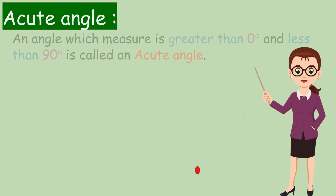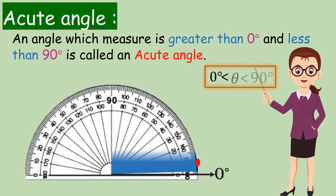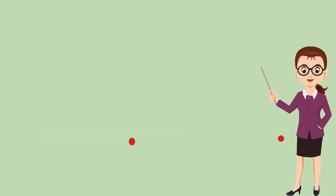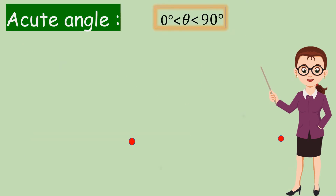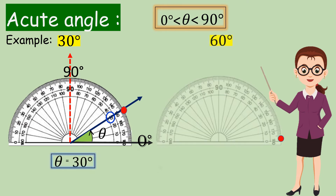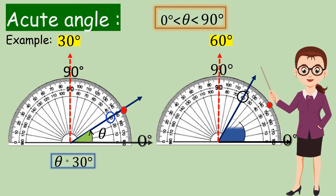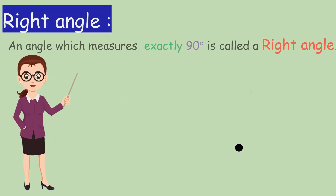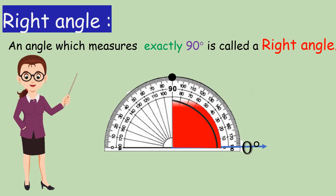Acute Angle: An angle which measures greater than 0 degrees and less than 90 degrees is called an Acute Angle. Examples: 30 degrees, 60 degrees. Right Angle: An angle which measures exactly 90 degrees is called a Right Angle.